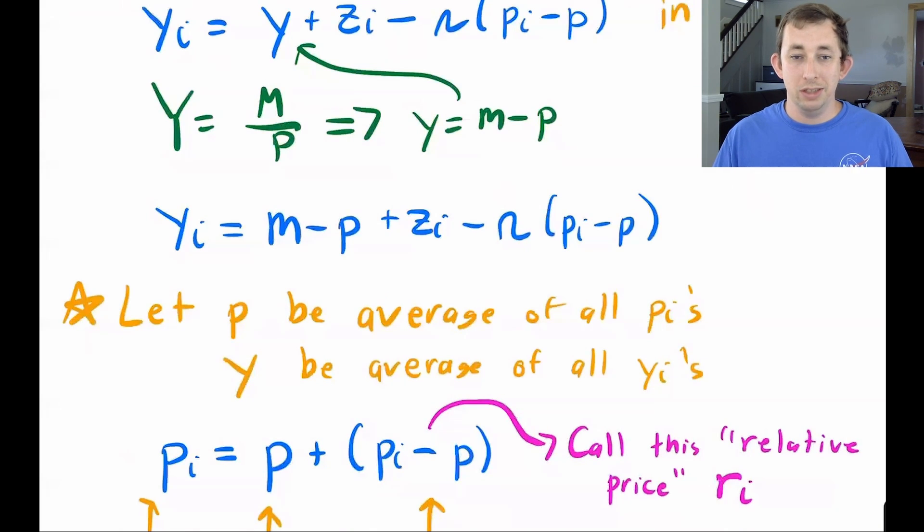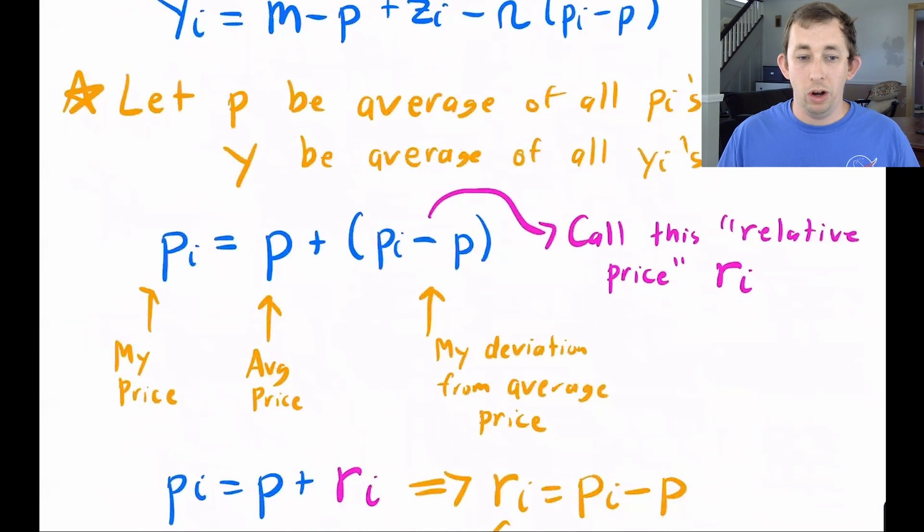Now what I'm going to do is say, okay, well, what is p and what is y? Well, those are just going to be the averages of all the individual prices and all the individual outputs. So that's something that we're going to use. We also are going to say that well, this is my price, this is the average price level, and then my price is just this plus some difference from the average. So here's the difference from the average, I'm going to call this difference from the average the relative price or ri.